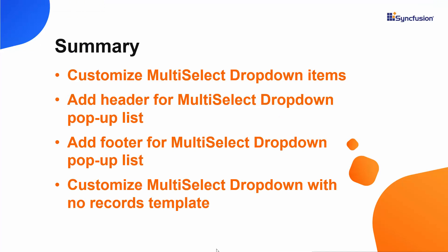Let's summarize what we covered in this video. We have seen how to customize the Blazor multi-select drop-down items as well as the component's selected value. Also, we have seen how to add a header and footer for the multi-select drop-down pop-up and how to customize the multi-select drop-down with no data available content. If you would like to see the working example of the multi-select drop-down used in this video, you can download it from the GitHub link in the description below. I have also provided a link where you can see if you qualify for a free license key to use our Blazor products through our community license.